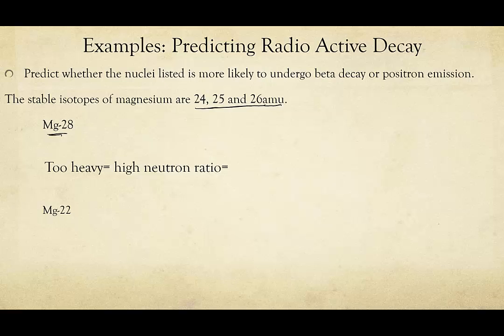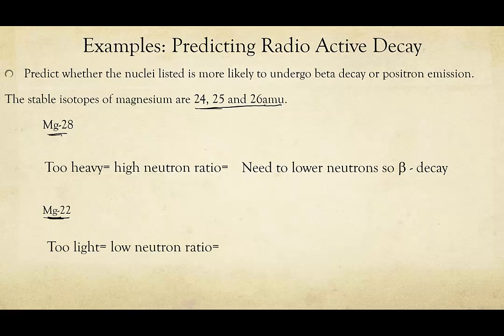So we need to lower the number of neutrons. To do this, we can undergo beta minus decay, which emits a negative charge, thereby lowering the number of neutrons and increasing the number of protons. Now let's do magnesium-22. Magnesium-22 is the opposite situation — it's too light compared to the stable isotopes of magnesium, meaning it has a low neutron ratio. To increase the neutrons and decrease the protons, we use positron decay, since a positive charge is emitted, making a proton into a neutron.